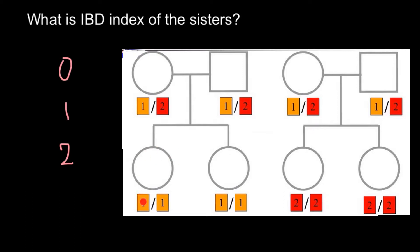Looking at the first example, this female has allele 1 and she can get it from her mother's side or her father's side. Because we see two alleles that are both 1, this sister cannot get both alleles from one parent. One allele had to come from the mother's side and the second from the father's side. This is because we are diploid — we have two chromosomes and everything from a genetic point of view is duplicated.